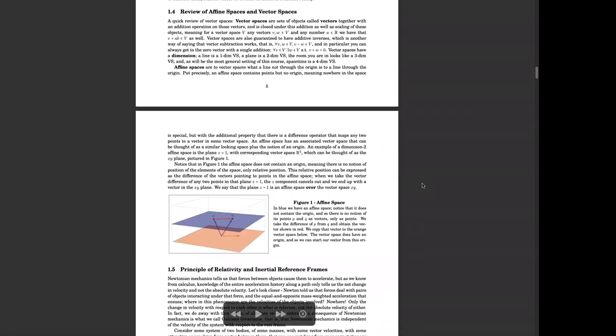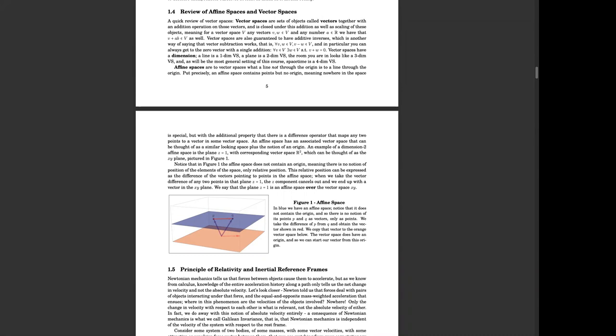We're going to start with affine spaces and vector spaces. If you've taken linear algebra, they might not have talked about affine spaces yet, but it's not too bad. You all know what a vector space is — you can have bases, you can choose them to be orthogonal, you have vectors that can be added and scaled. An affine space has less structure. While a vector space has to have an origin — a notion of zero for adding, subtracting, and scaling — affine spaces don't have an origin. There are no special points in an affine space; it's all homogeneous.